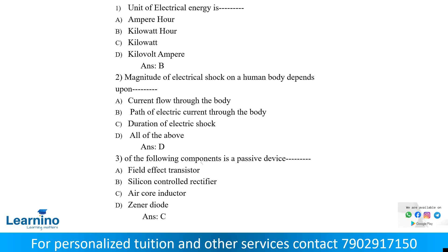The unit of electrical energy is — we call it 1 kilowatt hour. What is power? Energy by time. So energy is equal to power into time. Power unit is watt or kilowatt, into time in hours. So kilowatt hour is the unit of electrical energy.